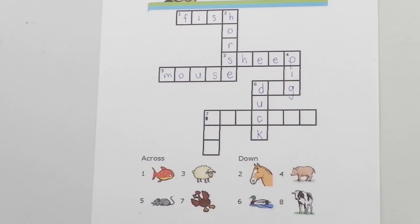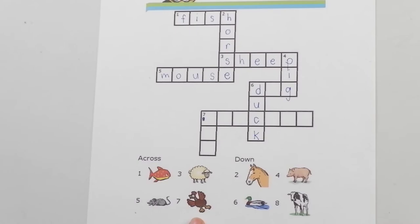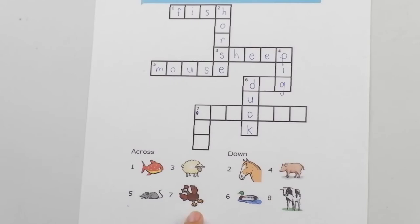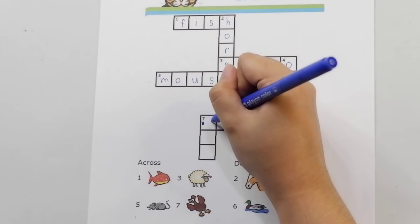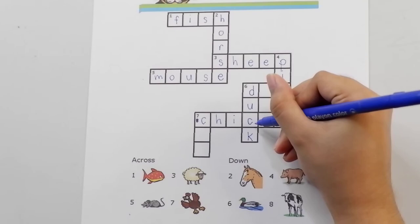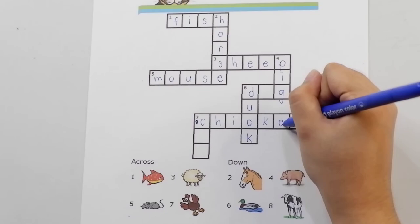Now, let's go to number seven. Number seven is a chicken. Let's go to box number seven and write the answer across or horizontally. Chicken. C-H-I.